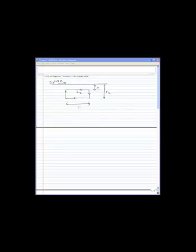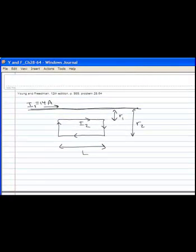This problem consists of a long current carrying wire, and close to it is a rectangular loop that also carries a current. So the long wire, I'm going to call that current I1. The loop, I'm going to call that current I2. The dimensions here, R1, R2, and L are given in the textbook.